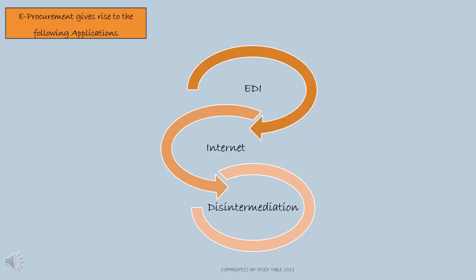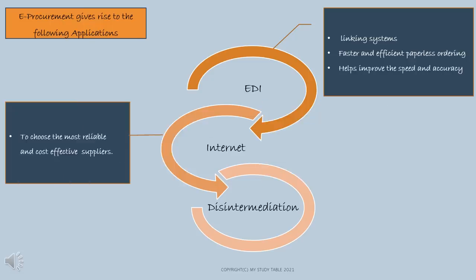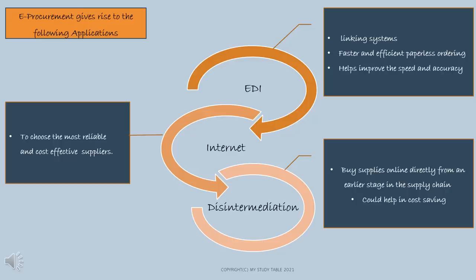Now let's have a look at the applications that an organization can use to manage its upstream supply chain. Beginning with EDI — electronic data interchange — this involves the organization linking its systems to those of its suppliers, enabling faster and more efficient paperless ordering, which improves the speed, effectiveness and accuracy in fulfillment of orders. The internet can be used to choose the most reliable and cost-effective suppliers from a larger geographical span. And through disintermediation, the organization may be able to buy its supplies online directly from a wholesaler rather than a retailer, therefore saving money.